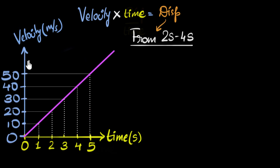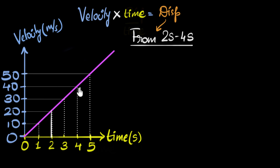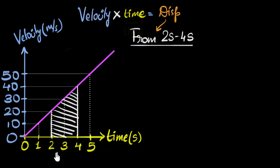Let's try another. We have another velocity time graph, totally different, and we are asked to calculate the displacement from two to four seconds. Notice that the velocity is changing — it starts with zero and then it's speeding up. So we're not going to use the formula directly. Instead, we will calculate the area under this graph, because that represents displacement. Since we are asked from two to four seconds, we calculate the area only from two to four under this graph — that represents the displacement from two to four seconds.